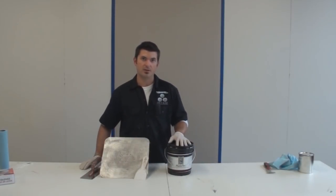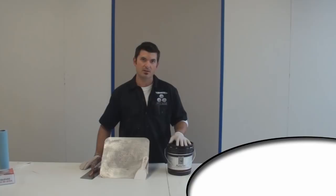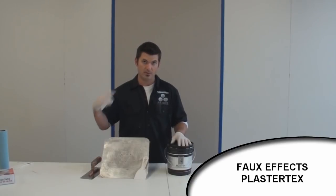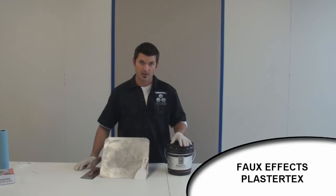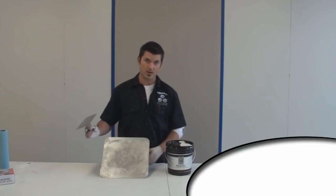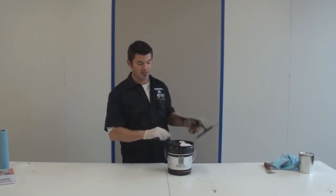For the first step of this method, we're just going to trowel a coat of plaster text by faux effects or aqua solutions onto the surface of my panel. So you're just going to need your plaster text untinted, just a scoop for it, a trowel, and a hawk. And then we'll go ahead and lay that in.